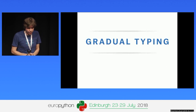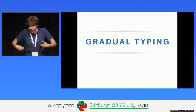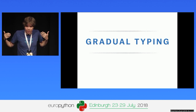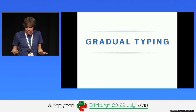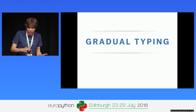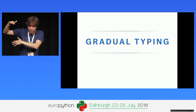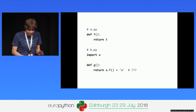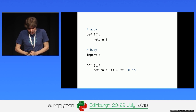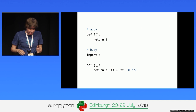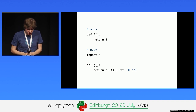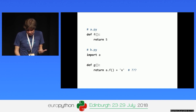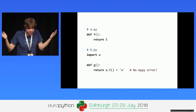Mypy supports gradual typing, so you can start with an existing code base without any type annotations and gradually add them until you reach a reasonable level of coverage — you don't need to reach 100%. However, there are some gotchas. In this example with modules A and B, if you run mypy it says it can't see any problem, even though adding an int to a string will blow up. Why? Because mypy doesn't type check functions without annotations.